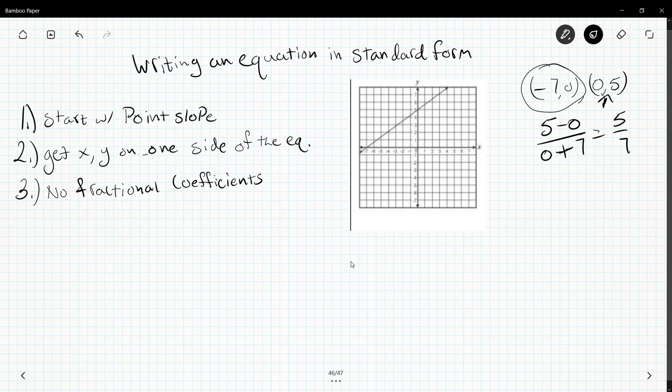So if I'm going to write this in point-slope form, I'm going to replace x₁, y₁ in our form. So I have y minus 5 equals 5/7 times x minus 0. This is in point-slope form.